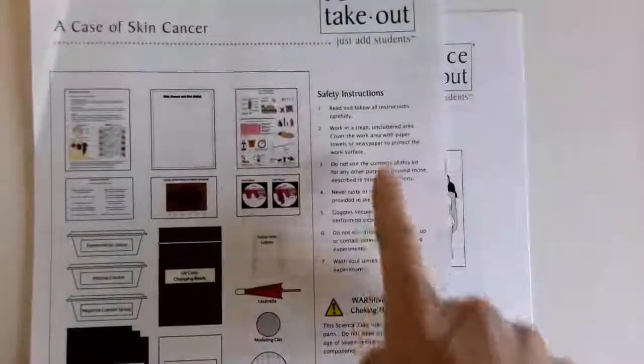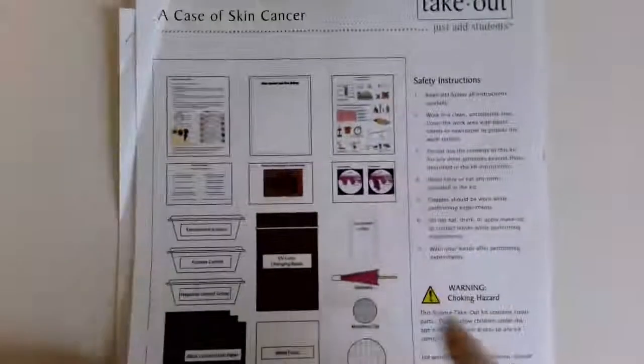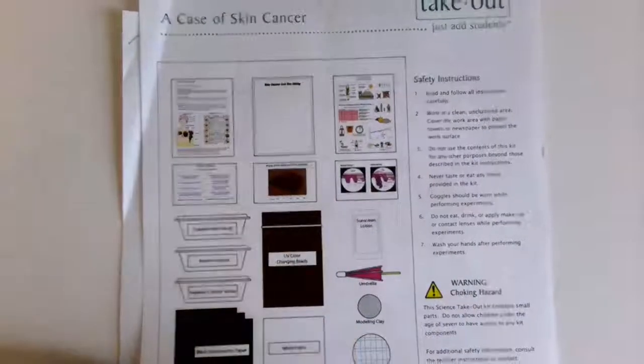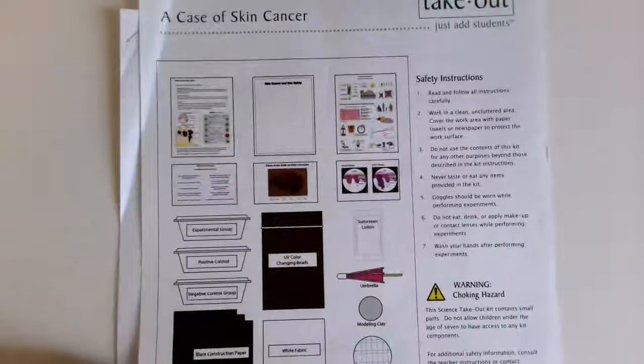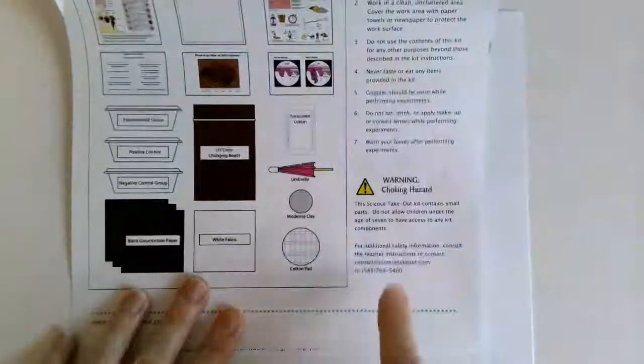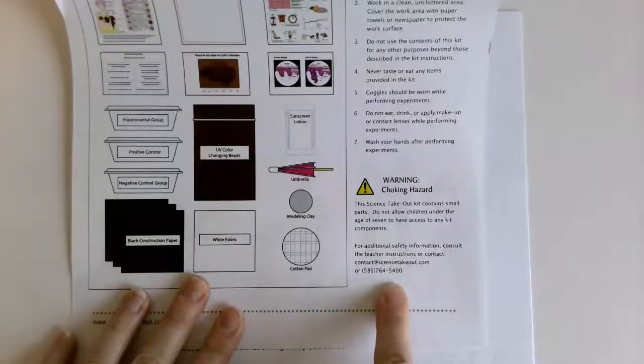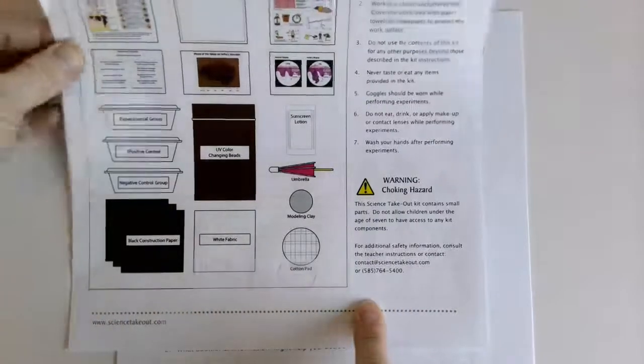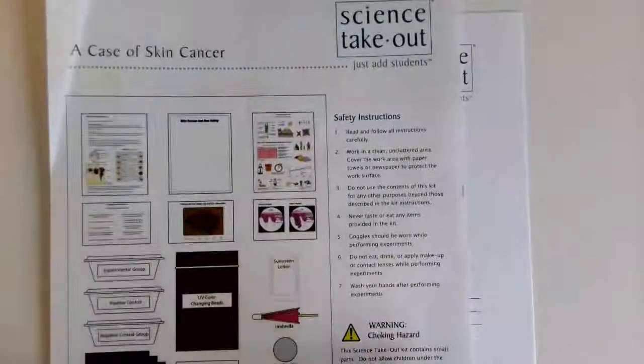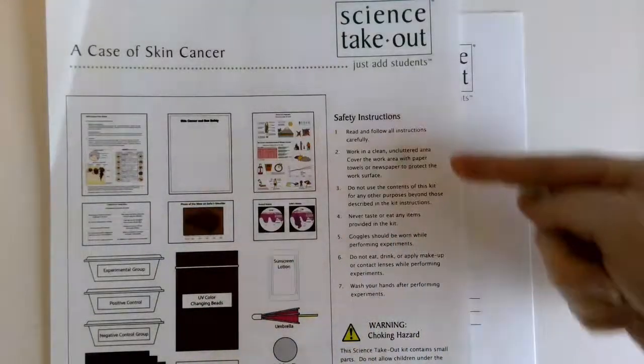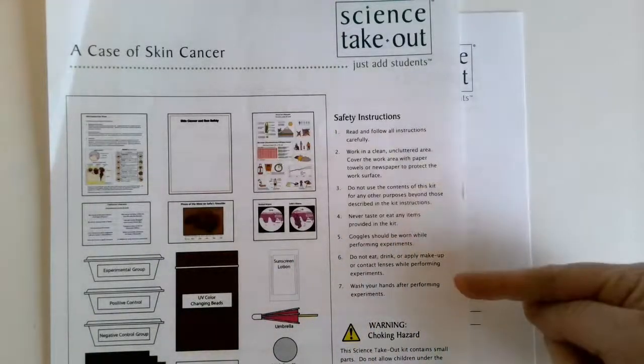Make sure you're reading the safety instructions and have everything required. If you're ever missing anything, there's a phone number on the bottom where you can get more information or report a missing supply. Make sure you're always following the safety directions - not in a cluttered area.